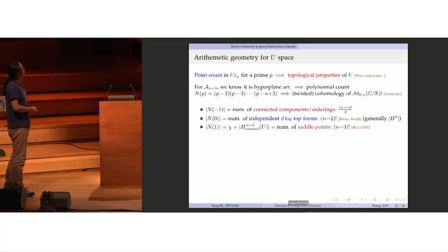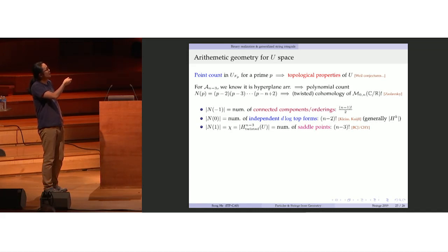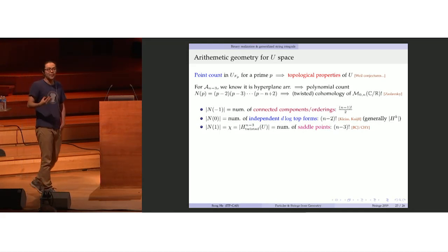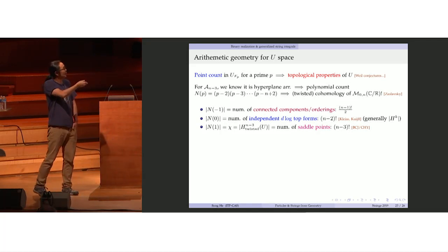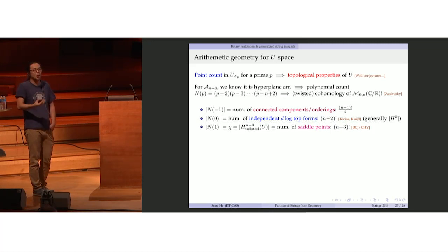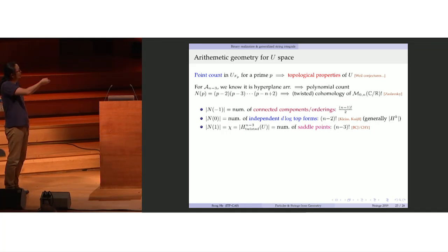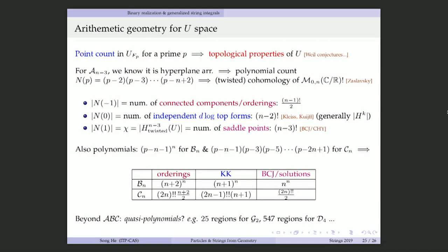We can also have some fun with arithmetic geometry on this space. Counting how many points the u-space has over a finite field F_p, where p is a prime, tells you a lot of topological properties. For the A_n case, since it's a hyperplane arrangement, the count is a polynomial — a nice polynomial encoding famous numbers related to amplitudes and M_{0,n}. For example, plugging in p equals minus one gives the number of connected components; p equals zero gives the number of independent top forms, which is (n-2)! — known to amplitude people as the KK basis; and p equals one gives the Euler characteristic or number of saddle points, which is (n-3)! — the BCJ or CHY count. This counting generalizes to other types like B and C, giving corresponding numbers of orderings, KK relations, and BCJ-like counts.